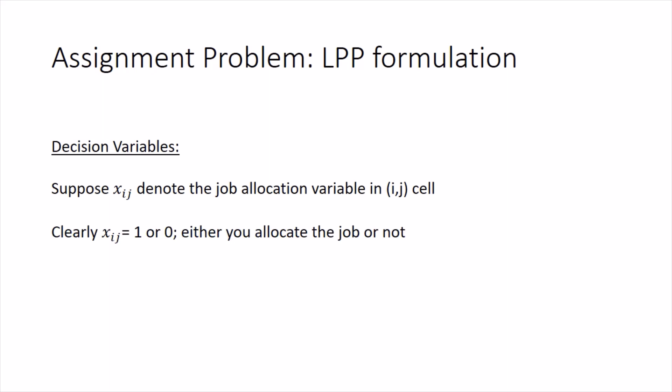That means if i-th person is being assigned the j-th job then the variable of that cell is x_ij. Clearly x_ij can have only two values, either one or zero. In the job allocation what is happening is either the person is getting the job or not getting. There is nothing in between. So one for getting the job and zero for not getting the job.